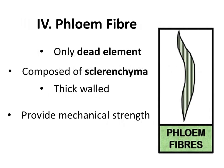The fourth component of the phloem is the phloem fibers. They are the only dead element of the phloem, as compared to the rest of the three elements — sieve cells, companion cells, and phloem parenchyma — which are living components. Phloem fibers are composed of sclerenchyma, which is the dead part of the plant, so they are also dead. They are thick-walled and provide mechanical strength to the cells.